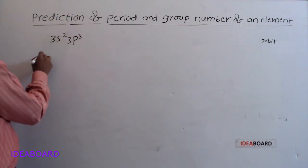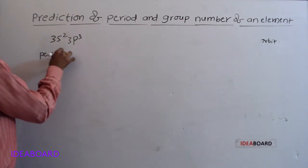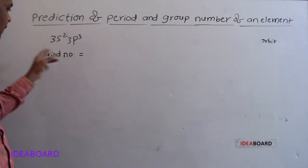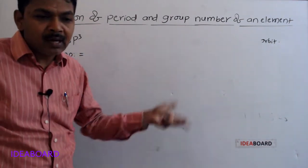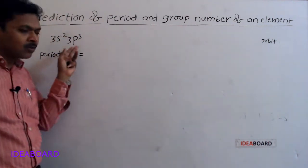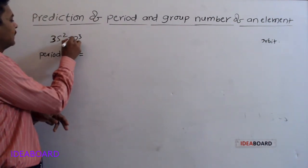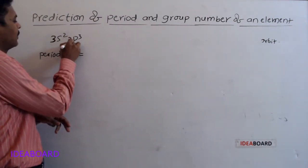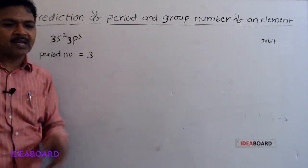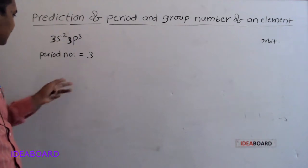Here, period number is equal to the principal quantum number of the valence orbit. The principal quantum number here is 3, so the element belongs to the third period.